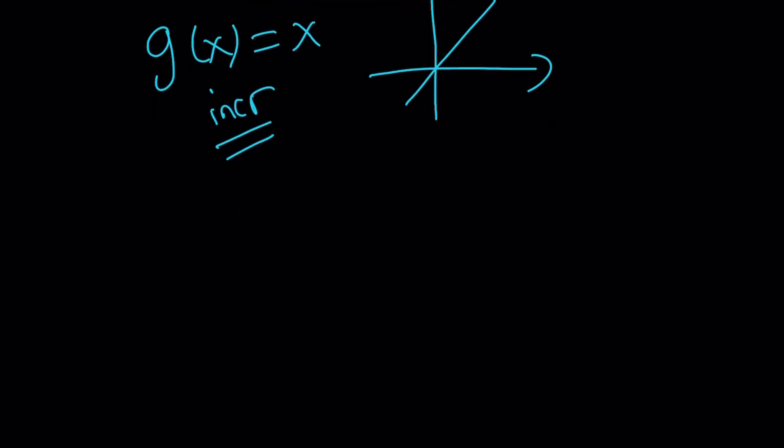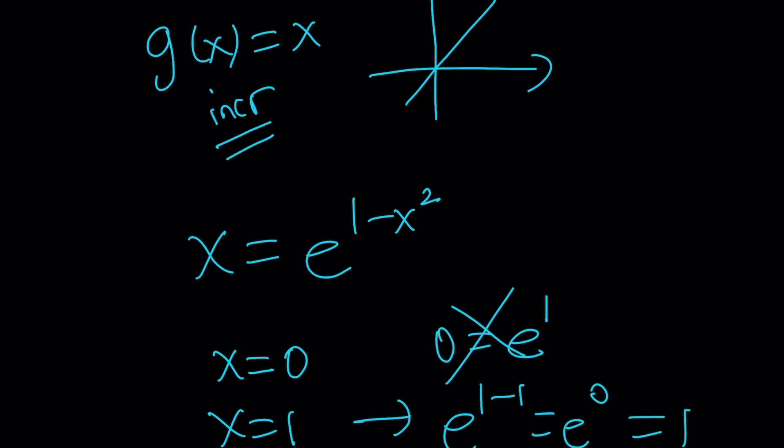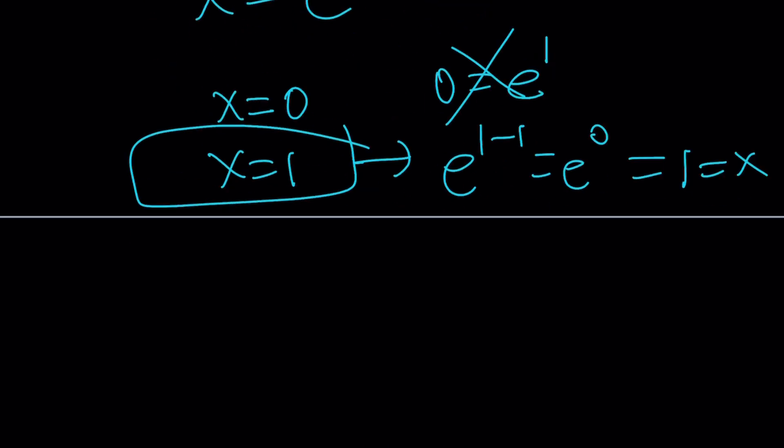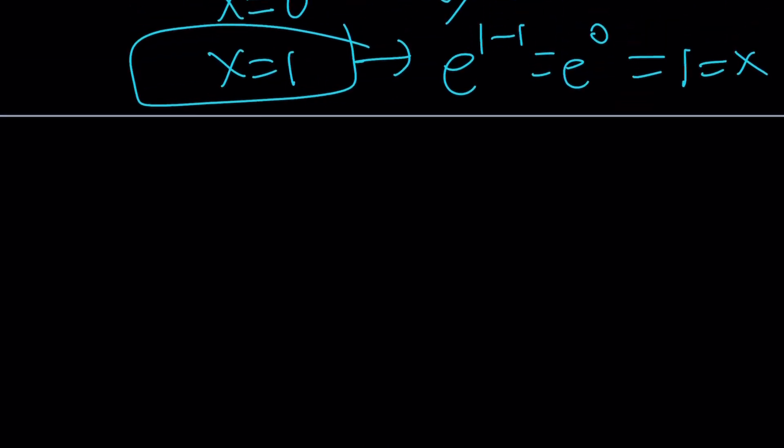The solutions can be obtained just by guessing. If x is equal to zero, then we have zero equals e to the power one which is not true. If x is one, motivated by the solution to 1 minus x squared, then we get e to the power 1 minus 1 which is e to the zero and that's equal to one which is exactly x. So x equals one is a solution and we're going to demonstrate that it's the only solution.